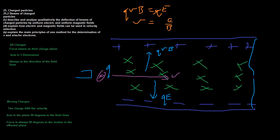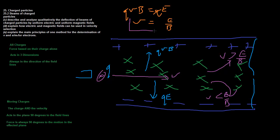Some particles are deflected one way because the magnetic field strength was stronger - meaning their velocity was too high, greater than E over B. Particles deflected the other way had a velocity less than E over B. This is how velocity selection of charged particles works: by combining electric and magnetic fields and equating them, only particles with v = E/B pass through.